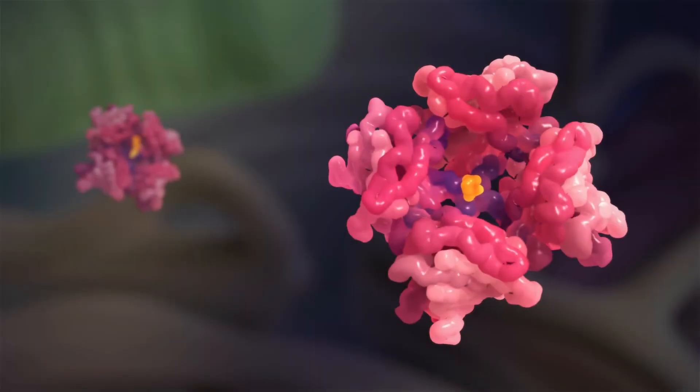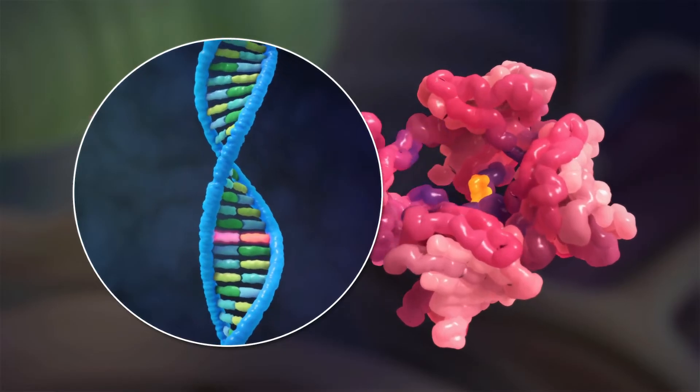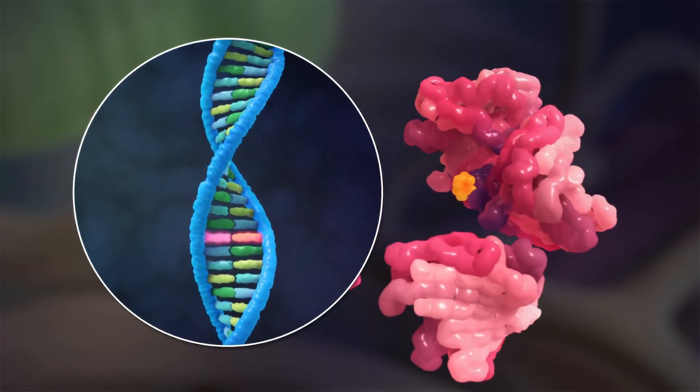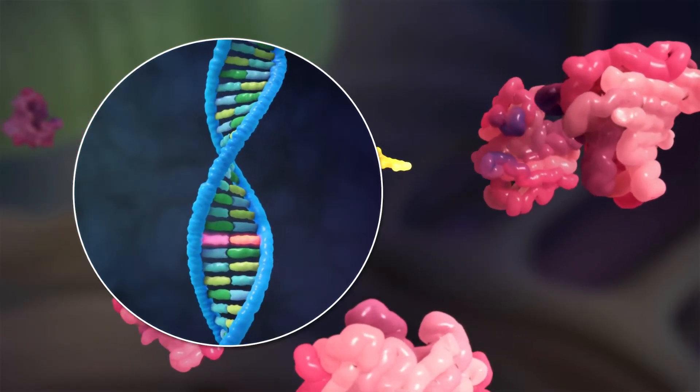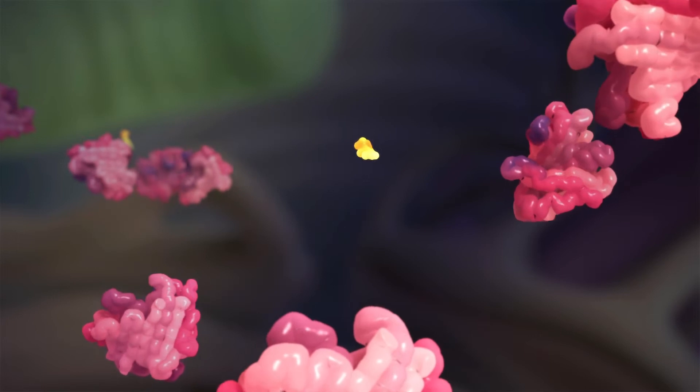In some cases, this is a result of inheriting a mutation in the TTR gene, which gives rise to TTR proteins that don't fit well together. This is known as hereditary ATTR amyloidosis.